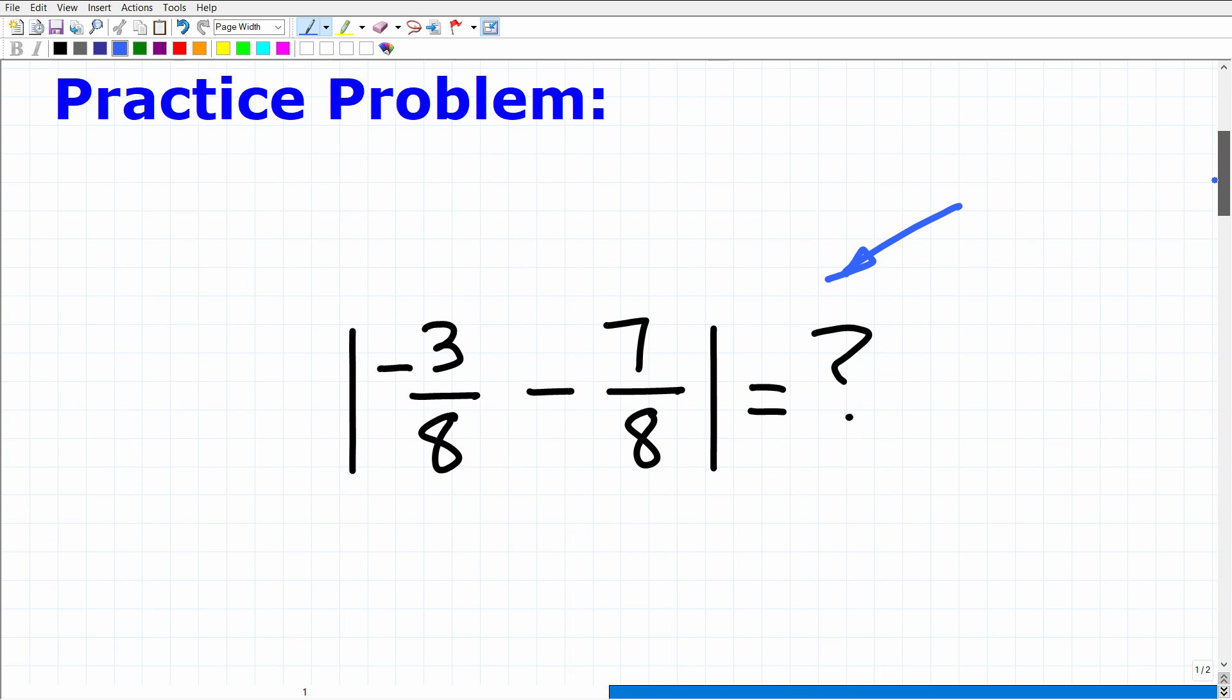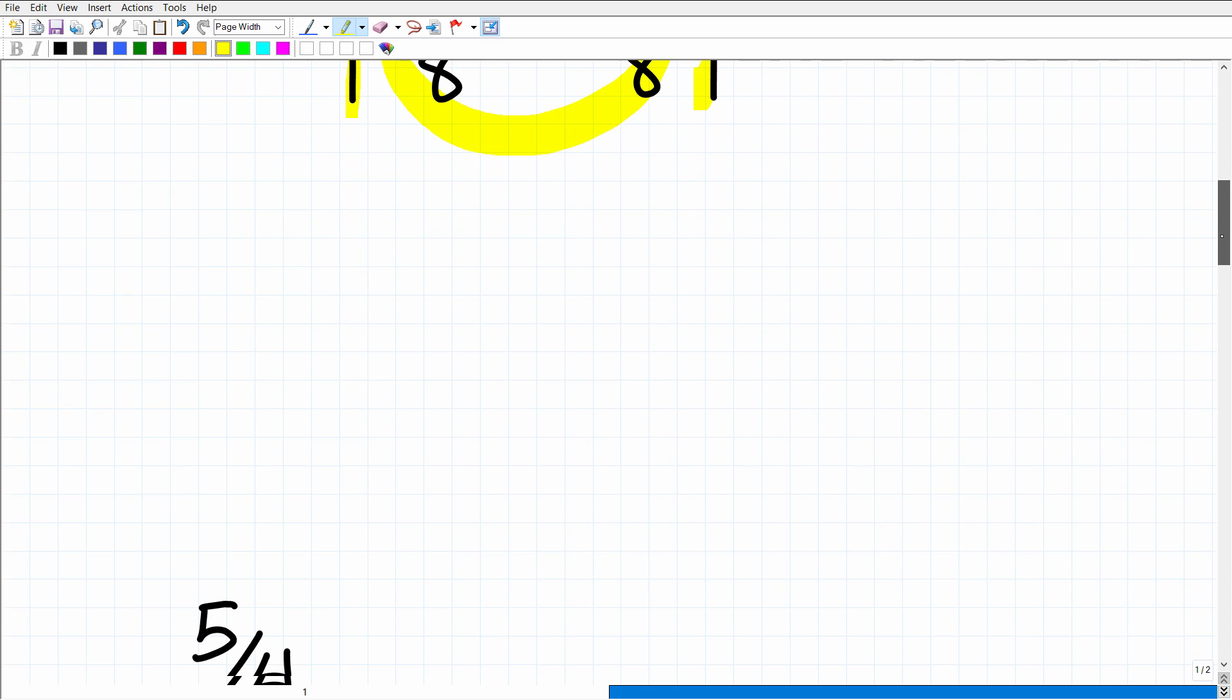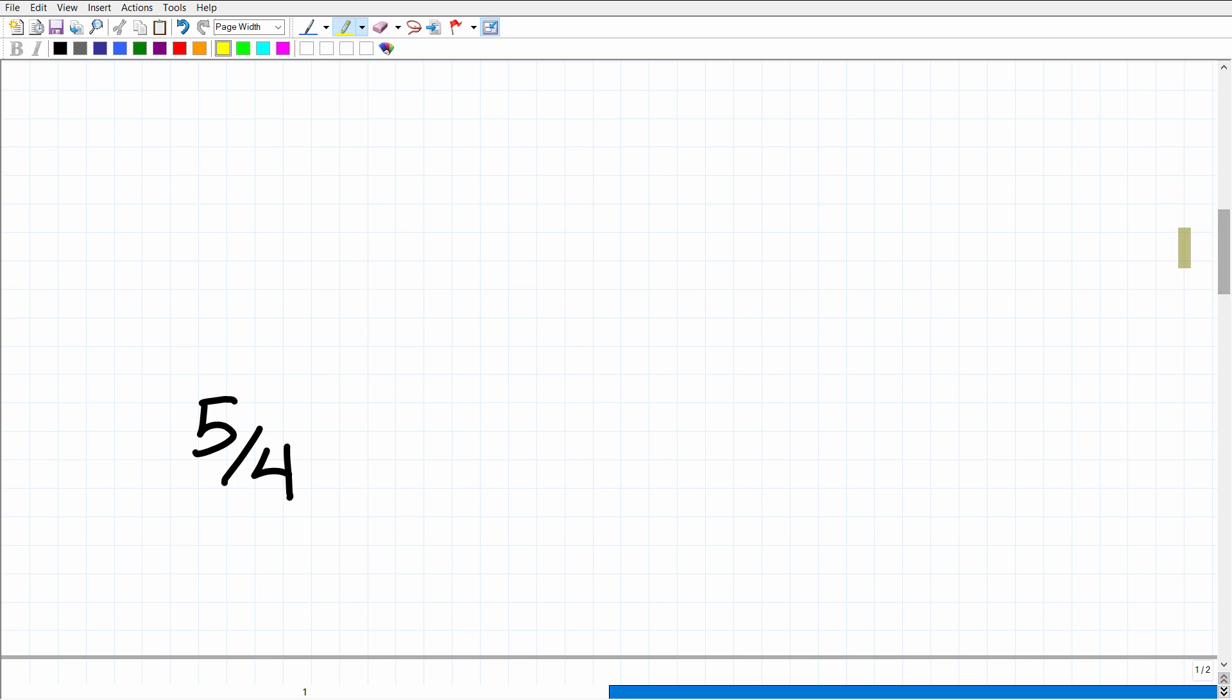So what are we talking about here? Well, we're talking about an absolute value problem. We want to find the absolute value of all this stuff right there. And what is the answer? Let's go take a look at that right now. The answer is five-fourths.